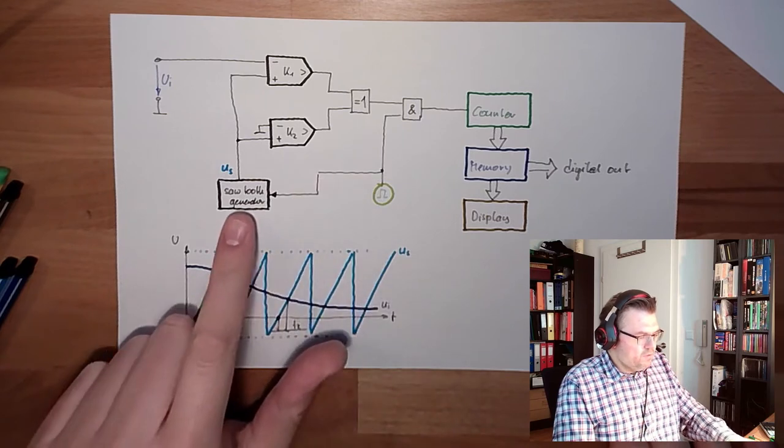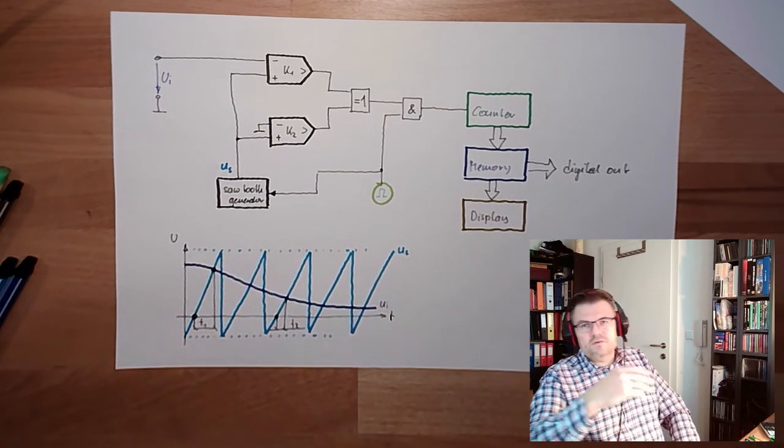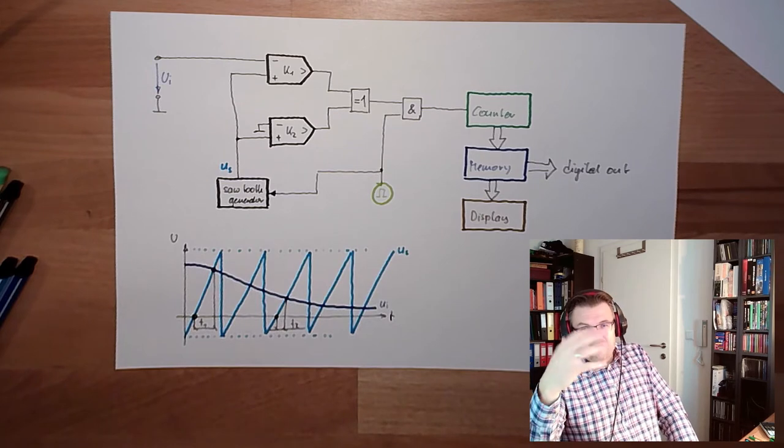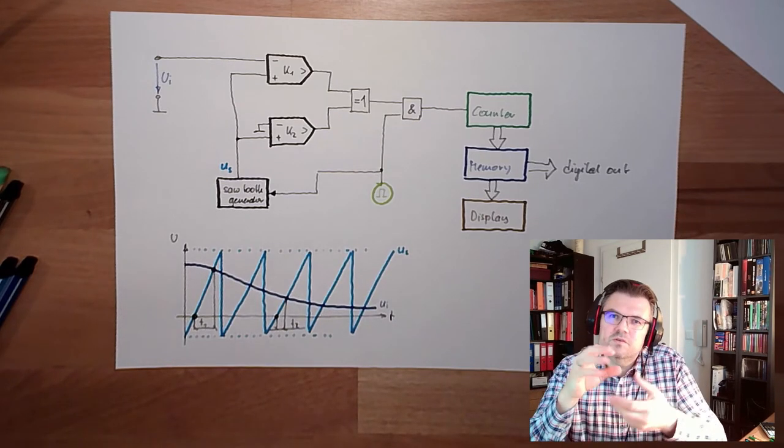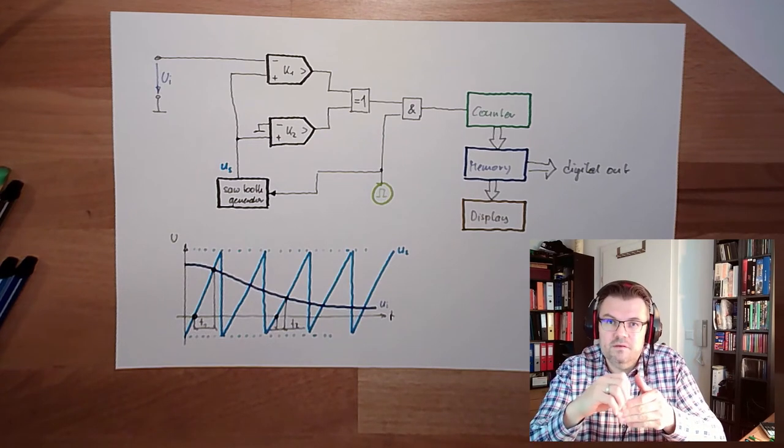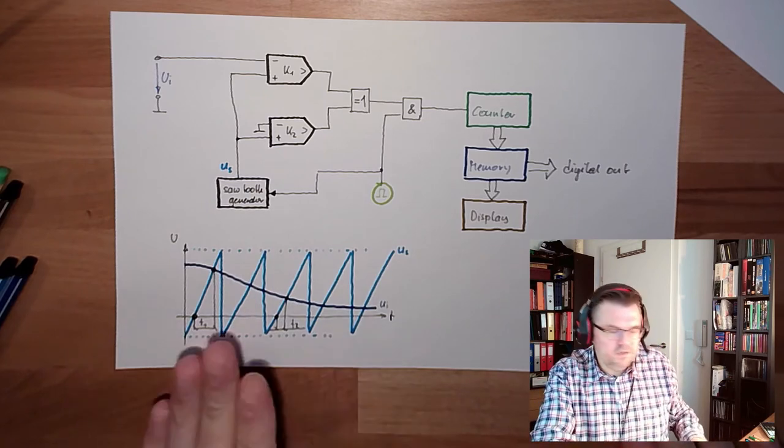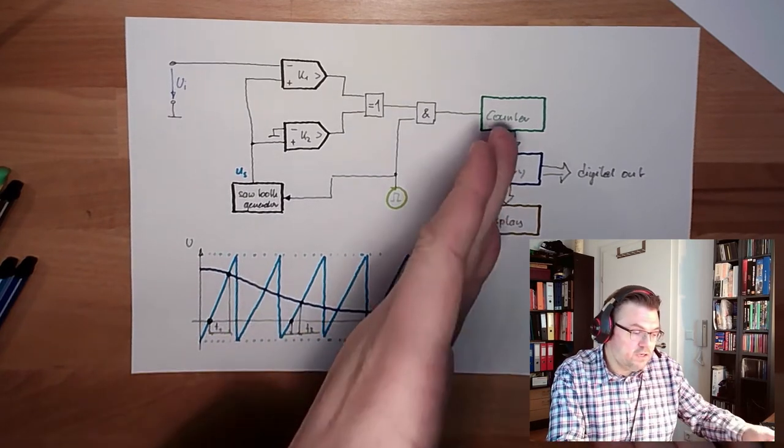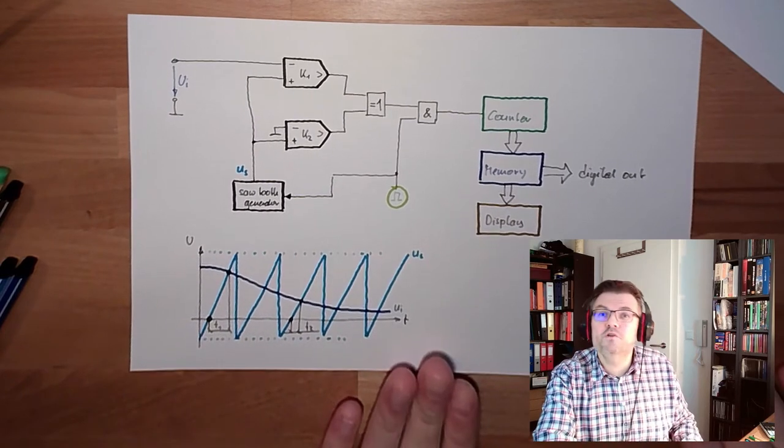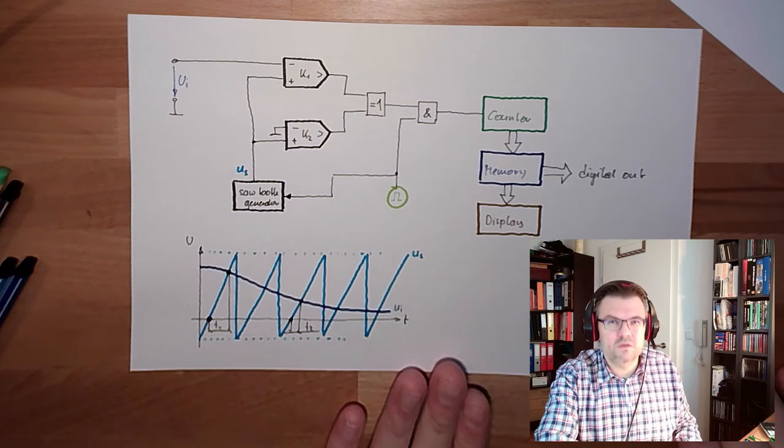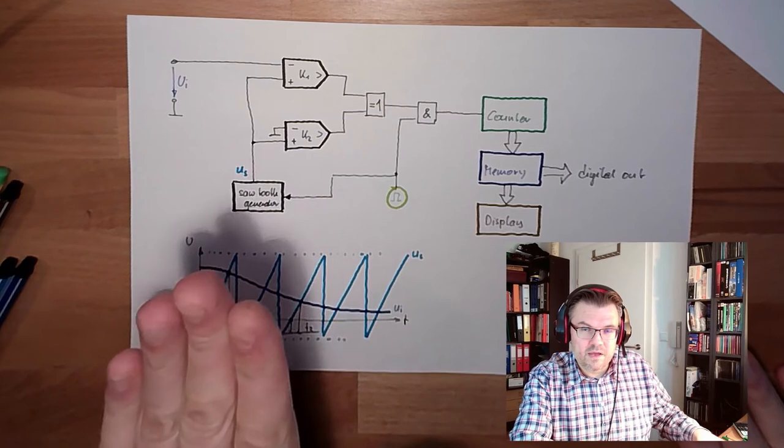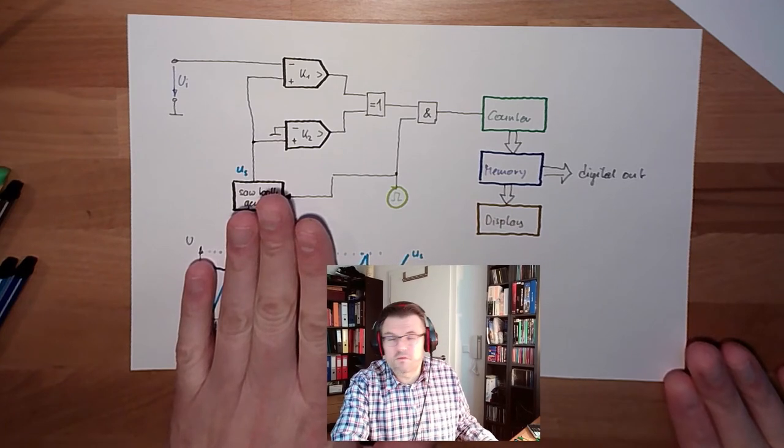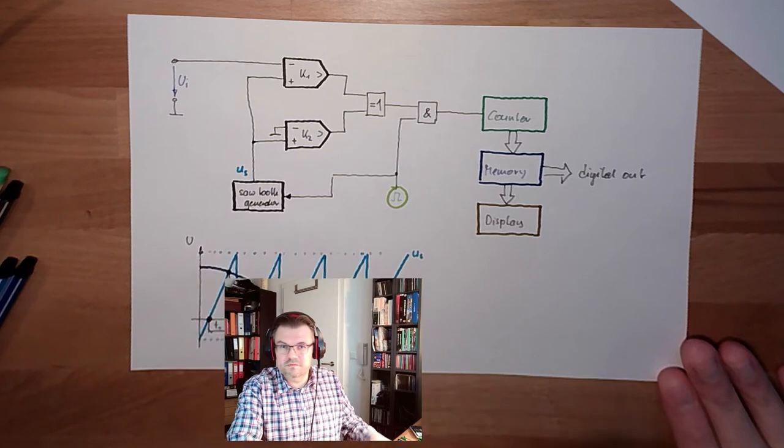Now why does this sawtooth generator need these pulses? You can build a sawtooth generator just with an oscillator, it's working on its own. But then you would run into troubles because usually these oscillators are temperature depending. If the temperature is changing, the frequency is changing. If the frequency is changing, the time is changing, and if the time is changing, the output is changing. So you would reproduce a temperature drift. This is usually not what you want.